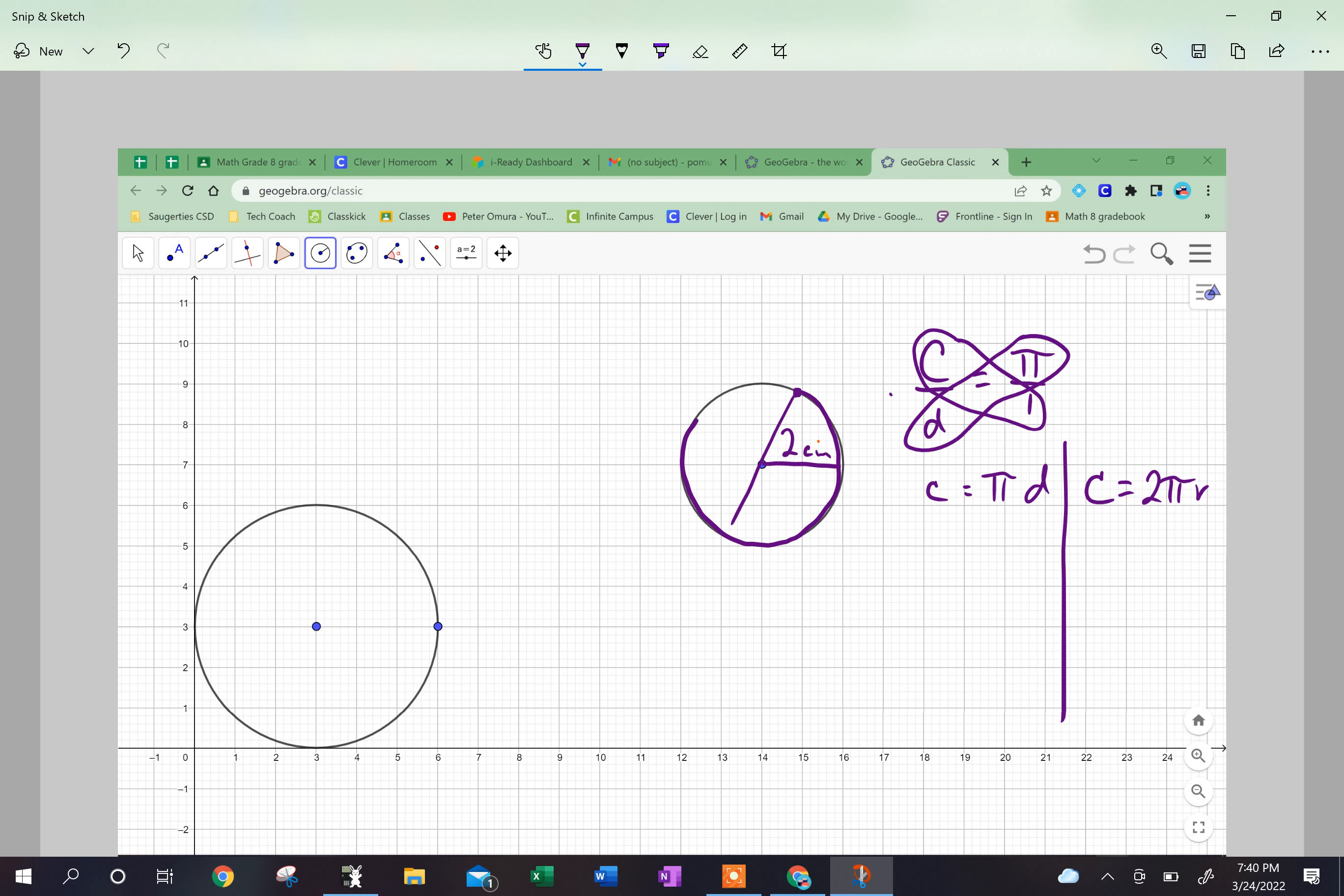C = 2 times pi times 2. So now I get circumference equals 4π, and I'm going to stop right here because this value, 4π centimeters, is an exact value. It's in terms of pi because pi is a perfectly good number.